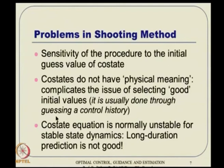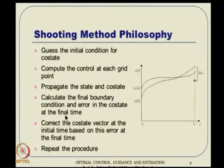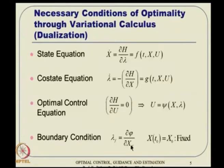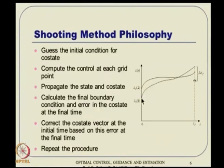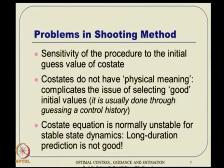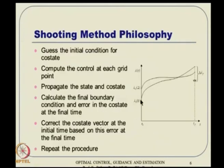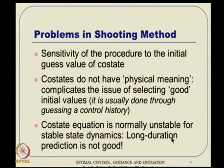Typically, it is done through a guessed control history — some heuristic or non-optimal stabilizing control is used. You use that control from the initial condition of the state, and finally get a final state. Once you get the final state, you can evaluate and then integrate the costate equation backward to get some information about lambda₀. The whole problem is that the costate equation is normally unstable, so long duration prediction is not good. If you are not very close to the real optimal lambda₀, error amplifies very fast because the dynamic equation is unstable.